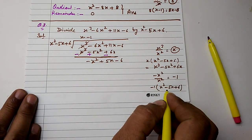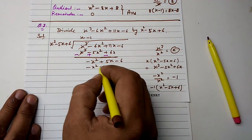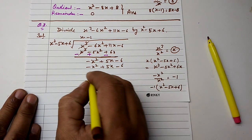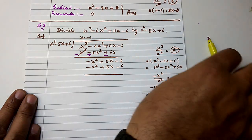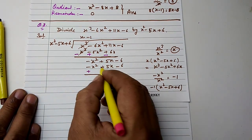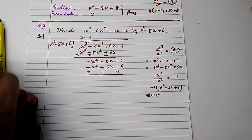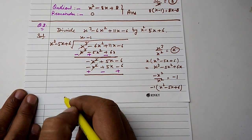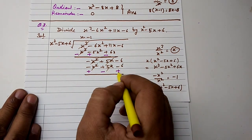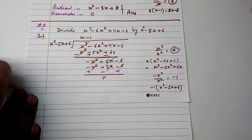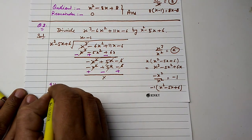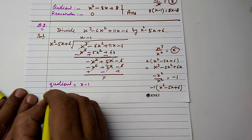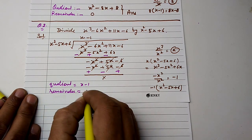We change the sign: positive becomes negative, negative becomes positive. x square cancels, 5x cancels, 6x cancels, and the remainder is 0. Therefore, the quotient is x minus 1 and the remainder is zero.